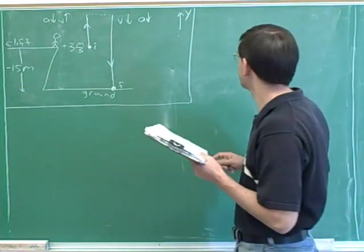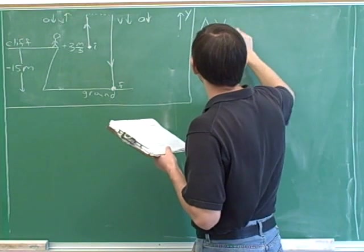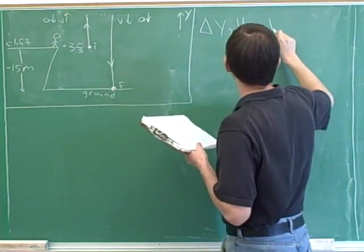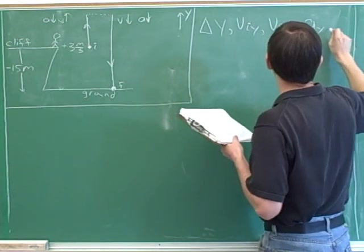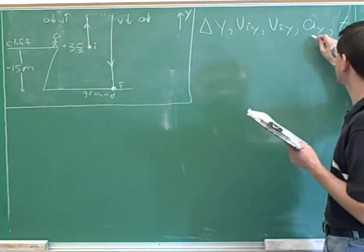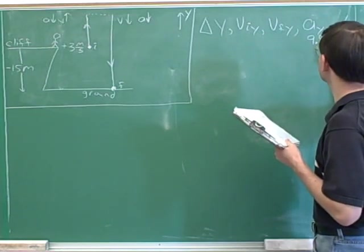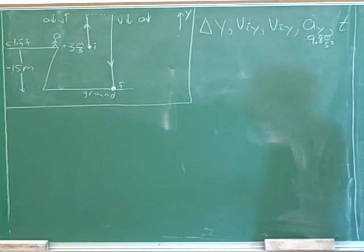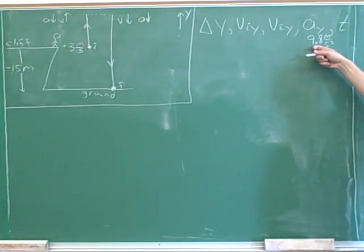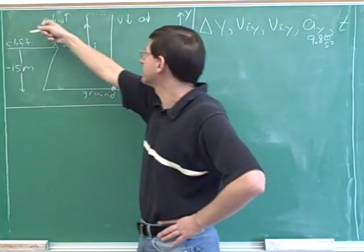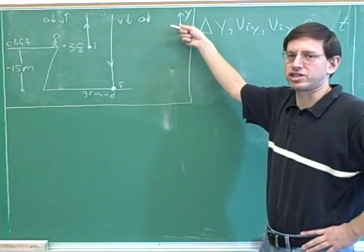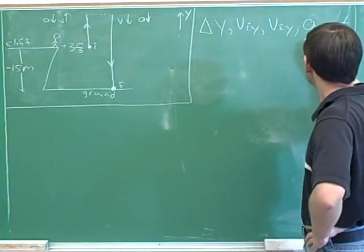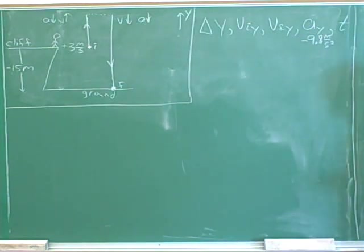We can go on to step four and write the kinematics variables. Right off the bat, we can write the vertical acceleration: 9.8 meters per second squared. We need to write the sign for that acceleration. We know that our accelerations are down from gravity, but we've chosen up as our positive direction. Since we've chosen up as the positive direction, this acceleration has to be negative.